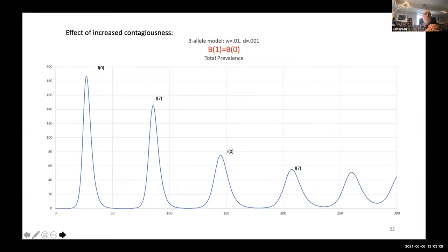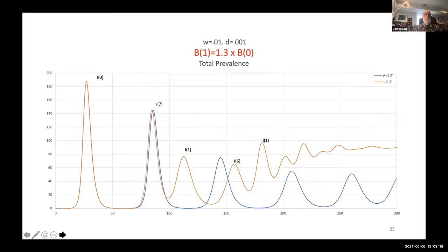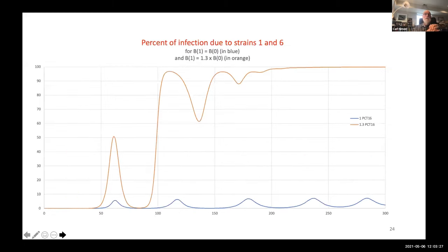Finally, what about differentiated contagiousness? If we increase the contagiousness a little bit in strain one, we move from the blue curve to the red curve. More contagiousness means higher prevalence, but interestingly — as we're seeing in Michigan — the more contagious strain completely dominates the epidemic. I'll hand it over to Jim.